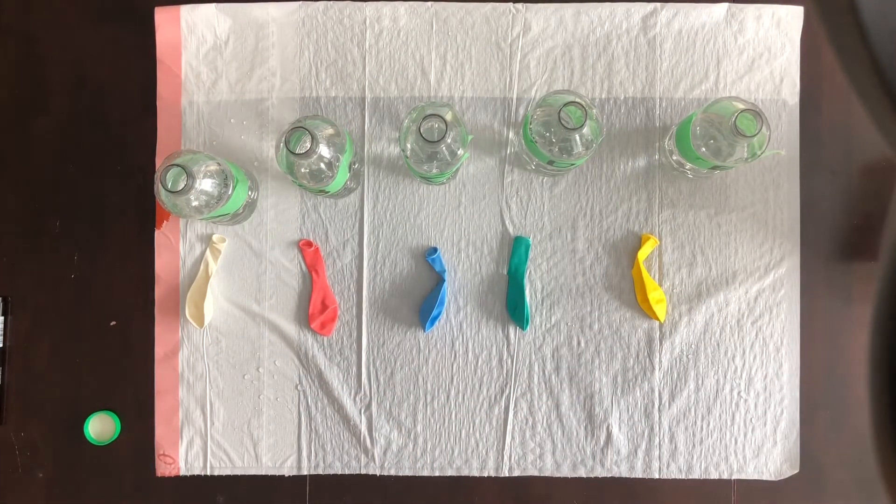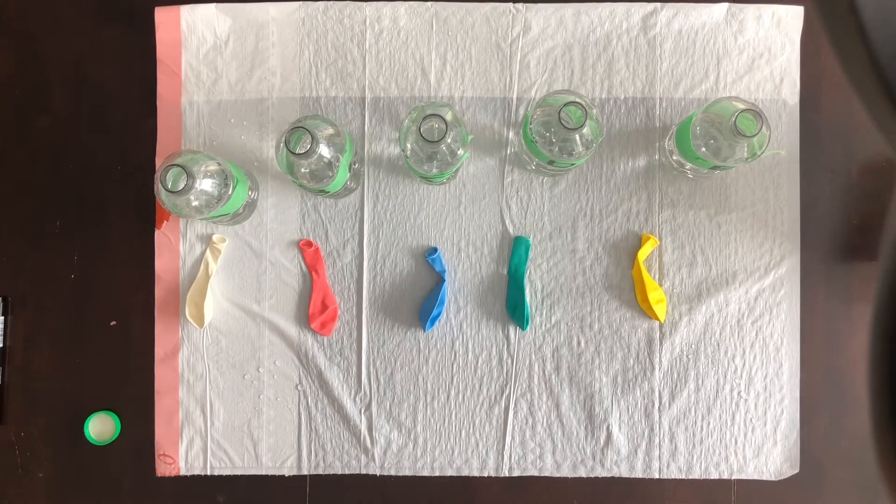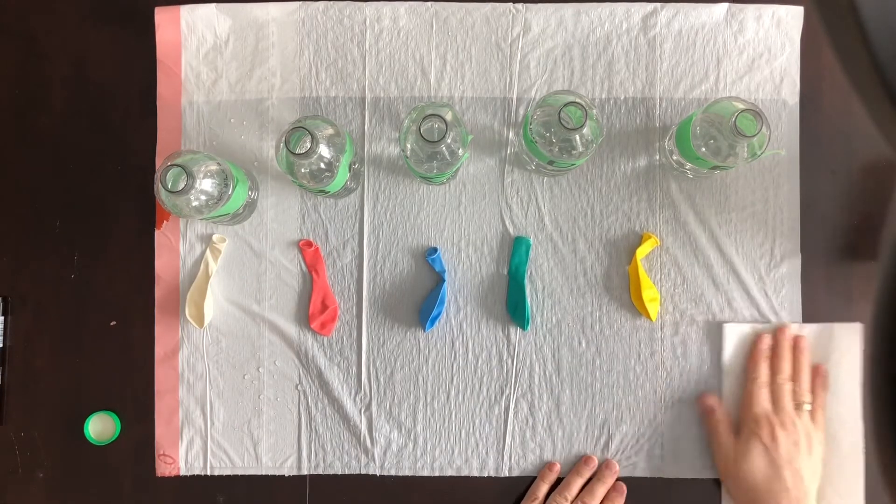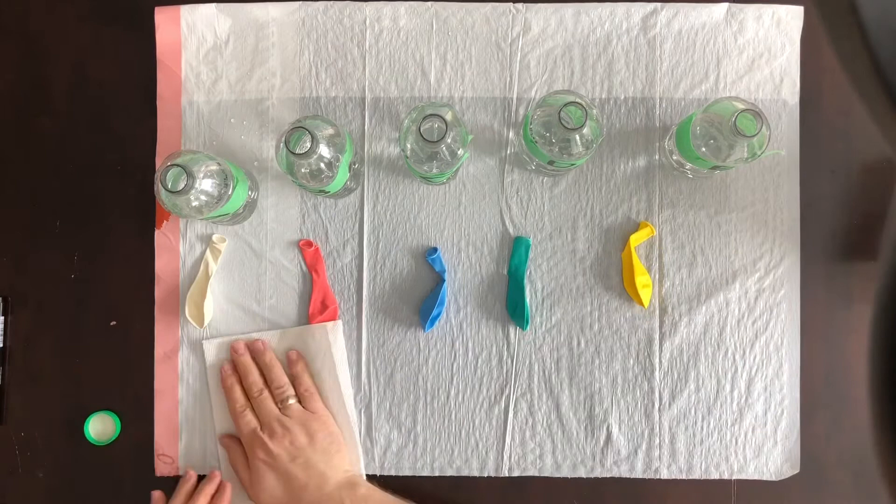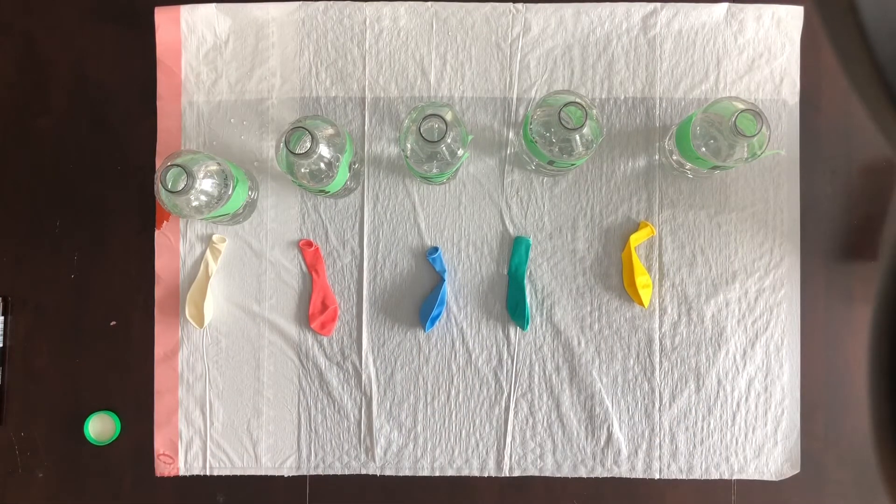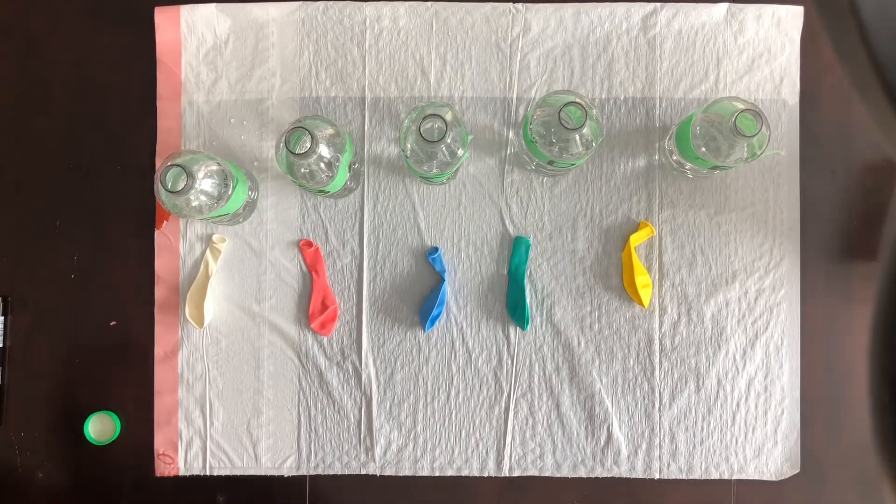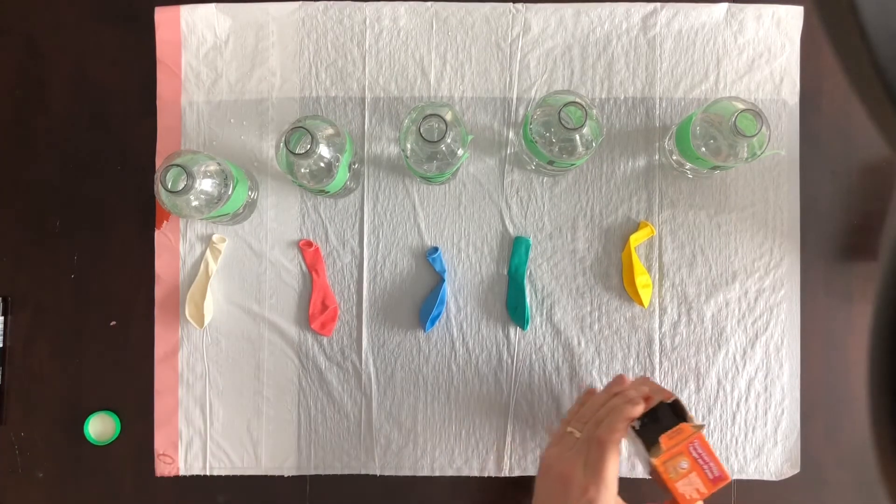When chemists dilute a liquid more and more through multiple steps, they call it a serial dilution. That's serial with an S, meaning that it's done in a series. That's what we've done here, a serial dilution.